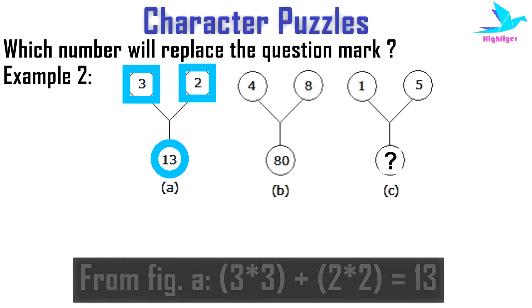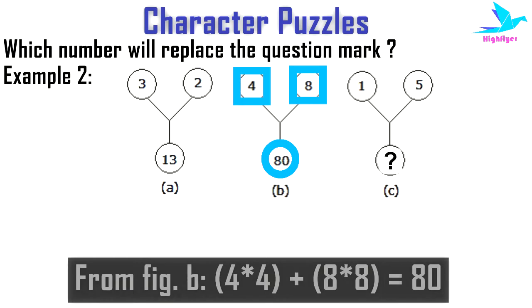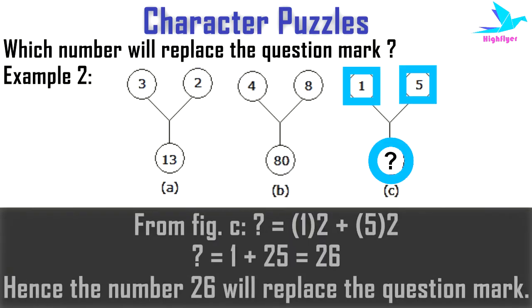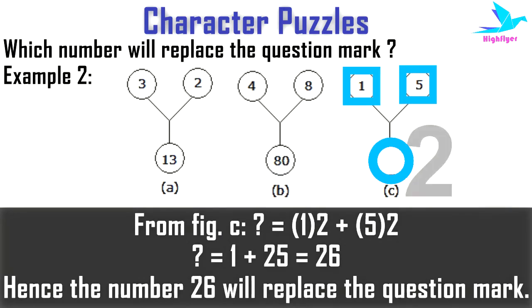In figure B we can see 4² + 8² = 80. In figure C, the required number will be 1² + 5² = 1 + 25 = 26.